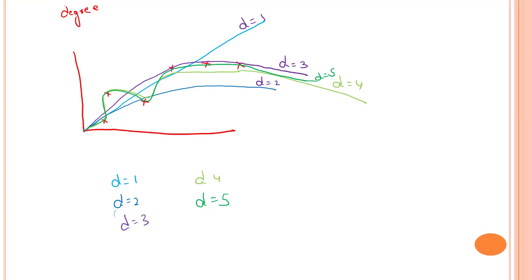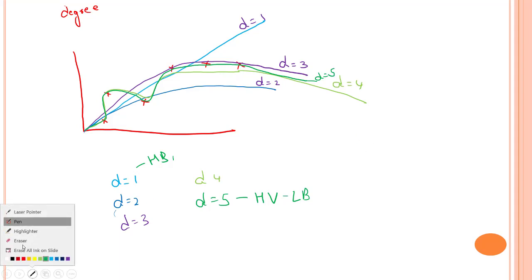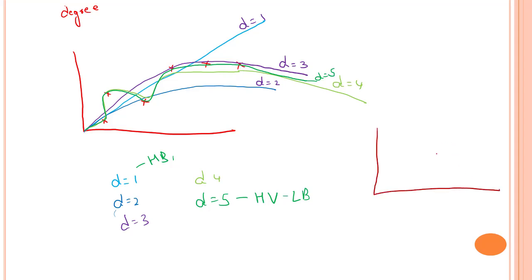For d equals to five, the model goes through all the points — this is known as a high variance problem, with high variance and very low bias. For d equals to one, there is very high bias. Now if we plot a graph of error versus complexity, as complexity increases the error curve looks like this. Lambda equals to one corresponds to degree one and lambda equals to five corresponds to degree five.